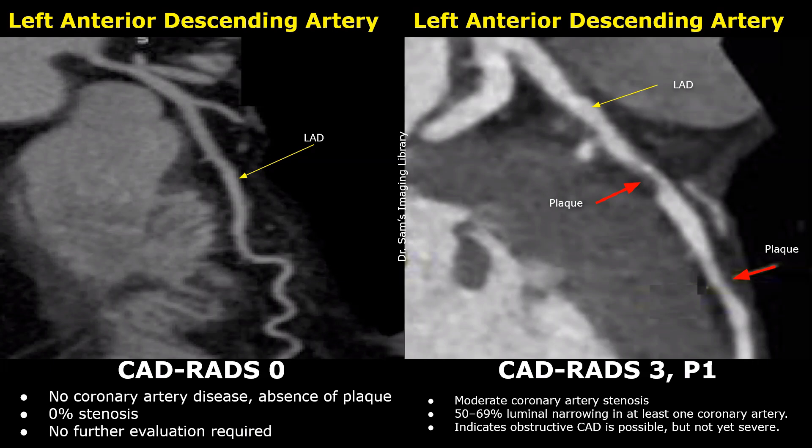Plaque burden is P1 because only two segments have plaque involvement. The other segments and arteries were normal.